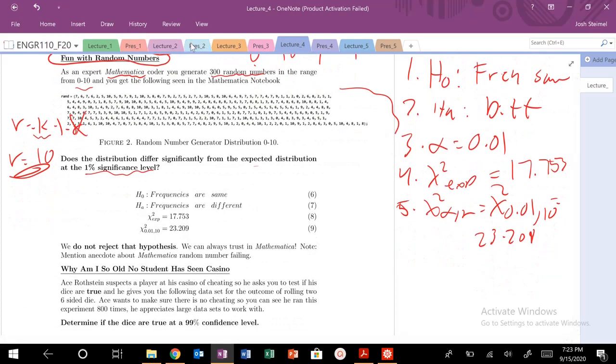And again, we can look back at our hypothesis testing. We know for a right-skewed test, this is 23.209. My chi-squared experimental falls over here, 17. So we are in the do-not-reject region.